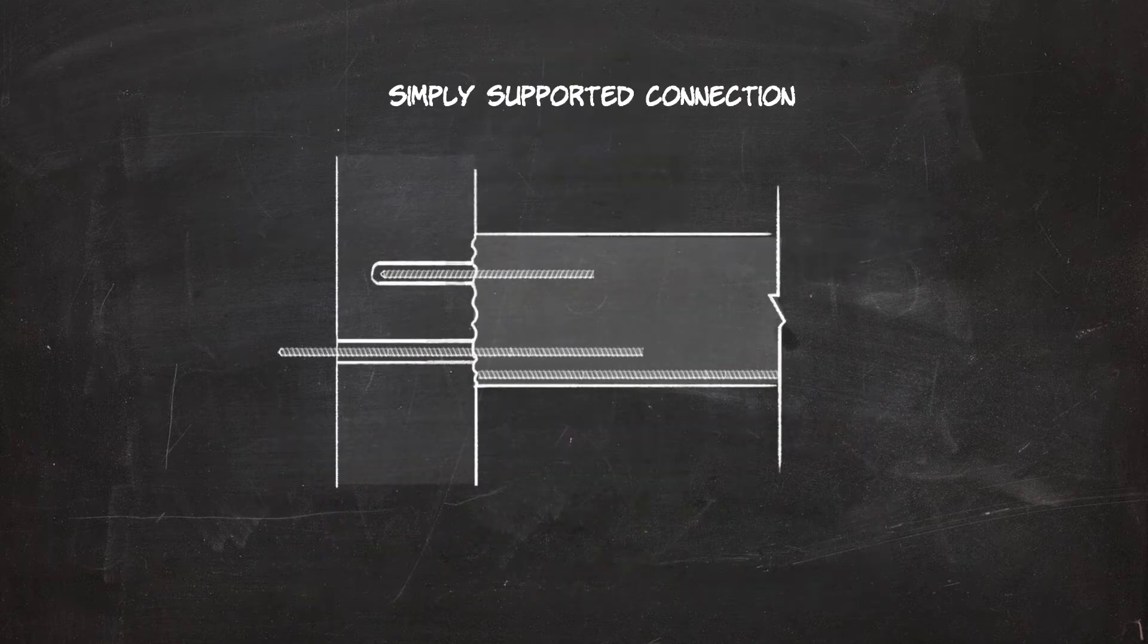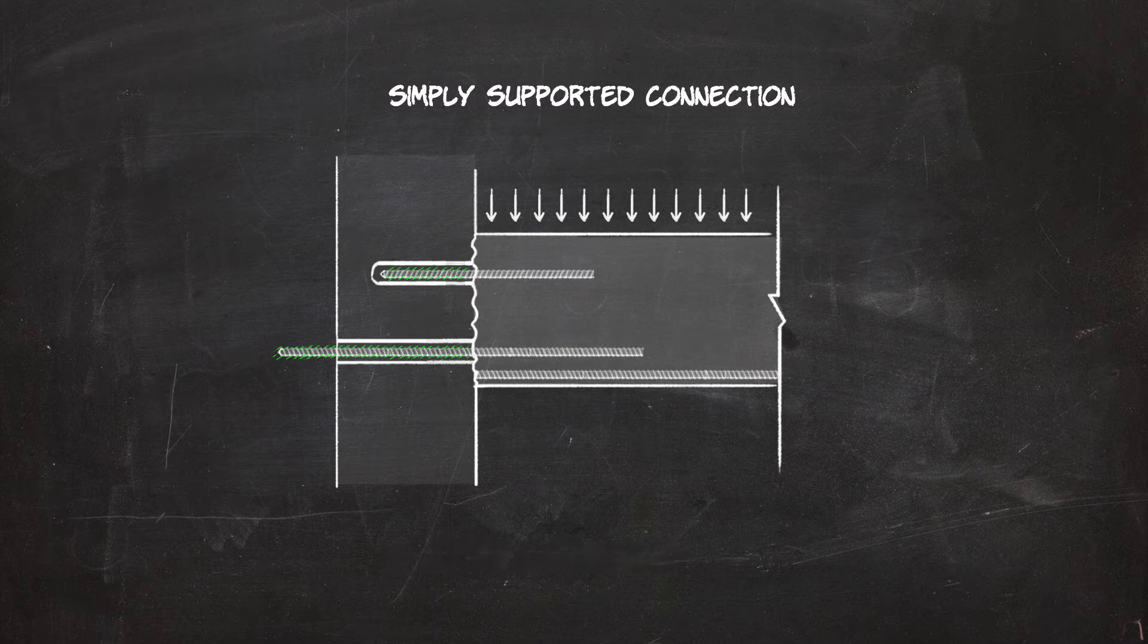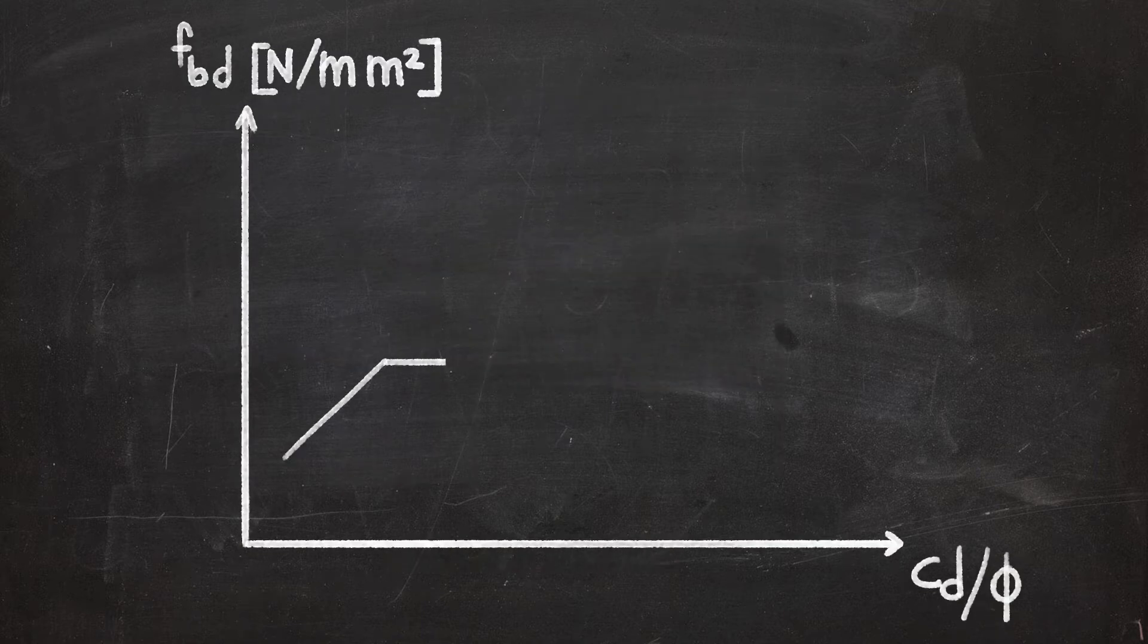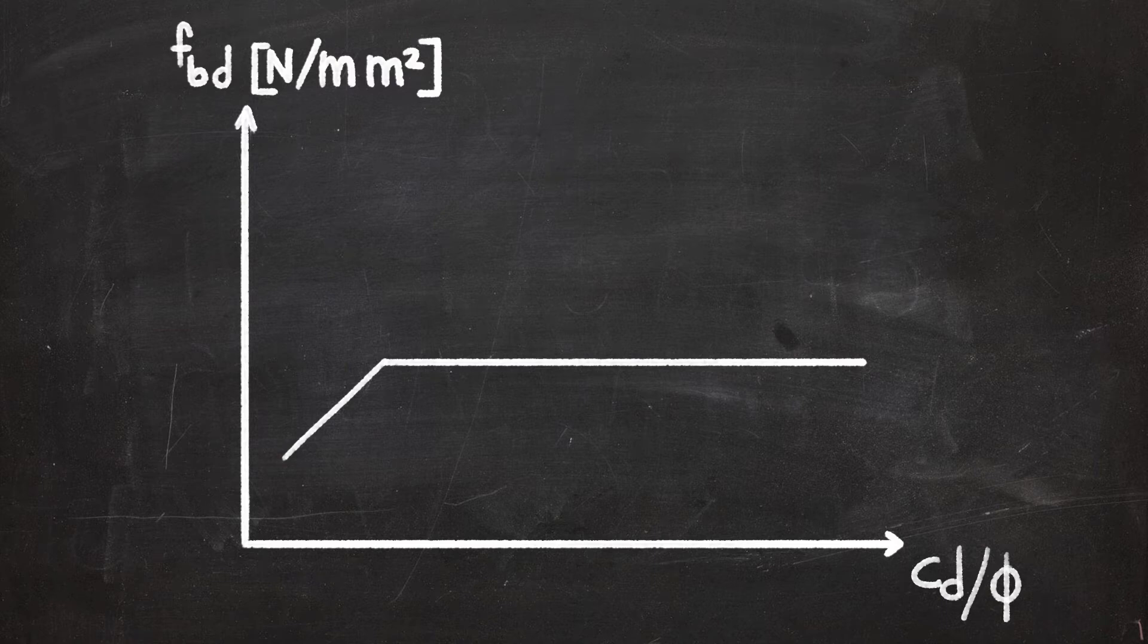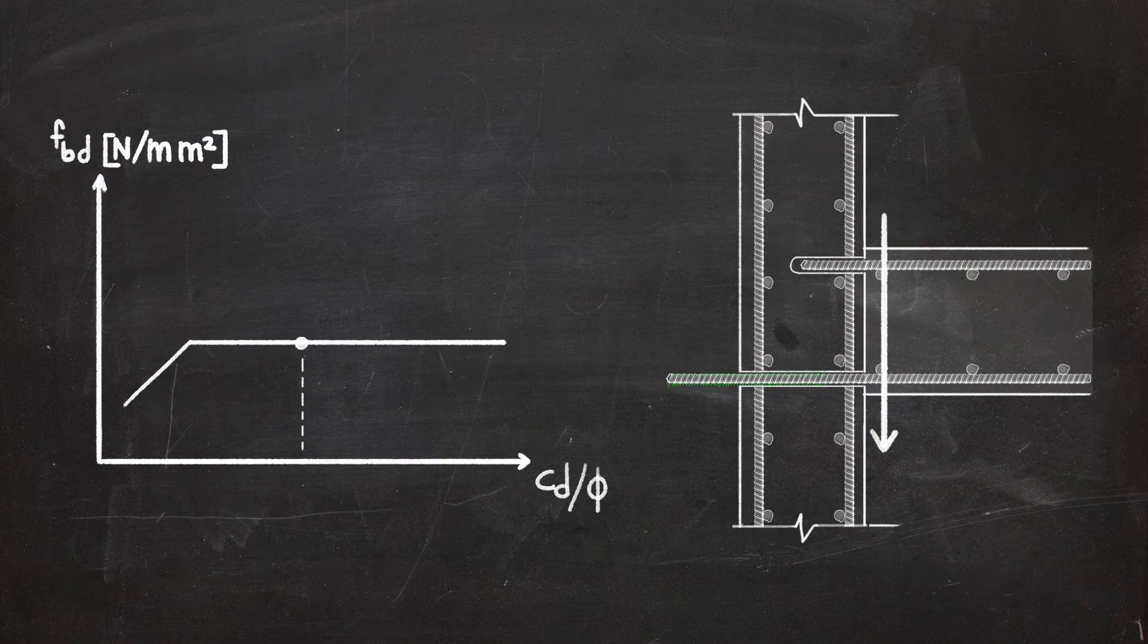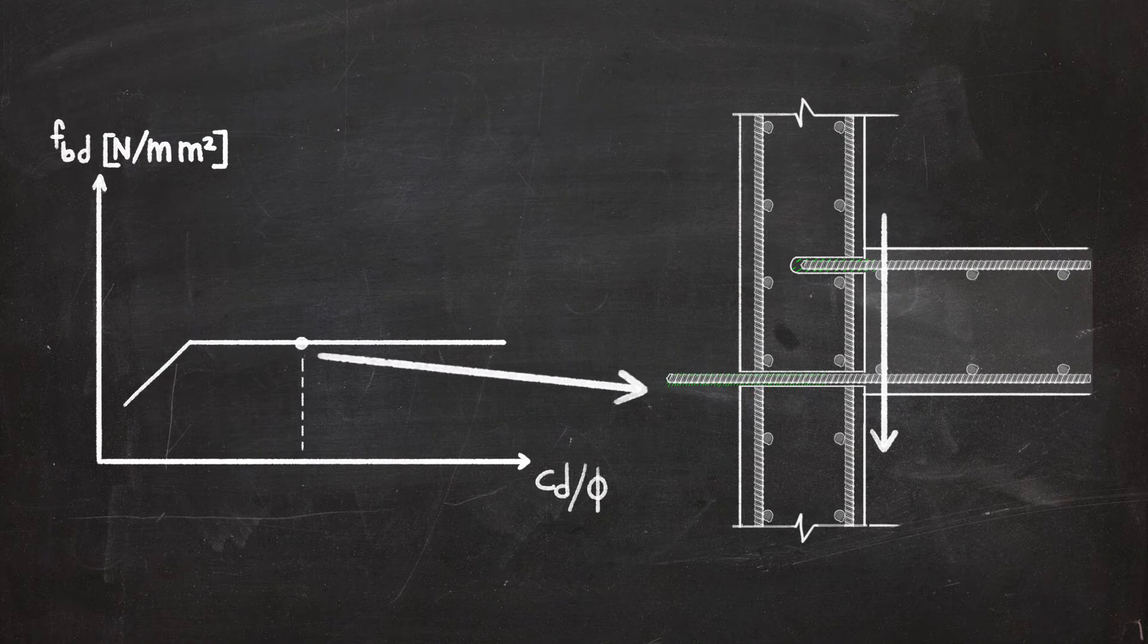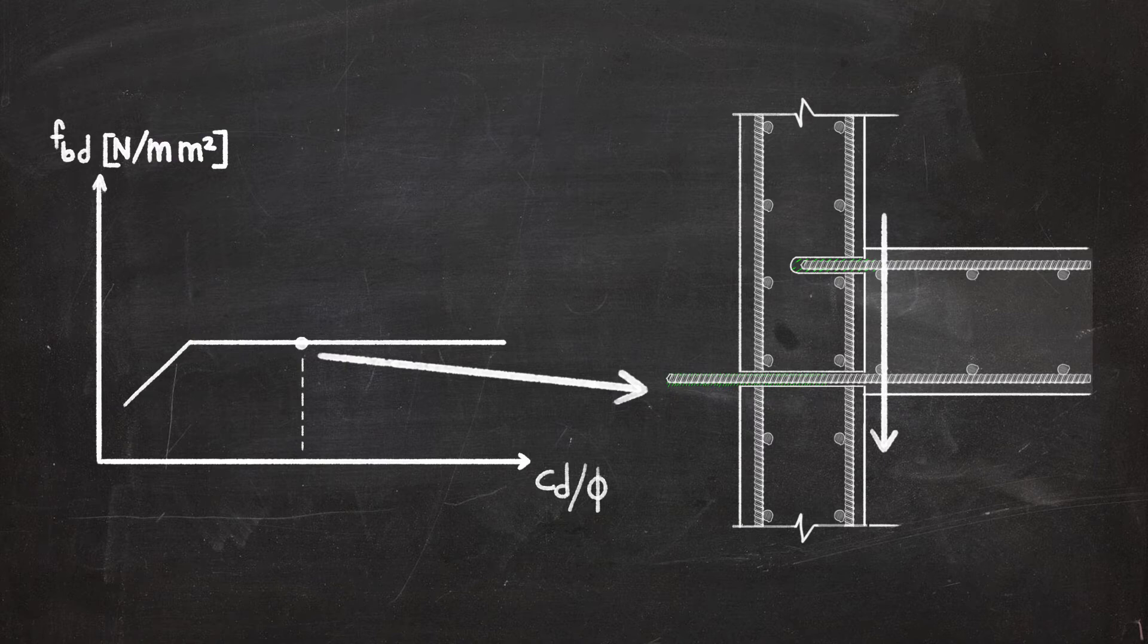On the other hand, for simply supported connections, engineers still face challenges. Designing these applications can lead to dead ends. The logic behind Eurocode is that post-installed rebars should work like cast-in. Their loading capacity is limited by code at the bond strength level. Let's have a look at this example. This slab is subjected to shear, and the required anchorage length would result in an unfeasible application.